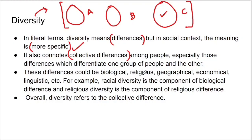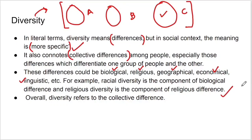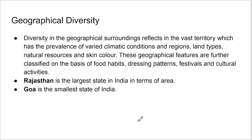These differences could be biological — boy or girl — religious — Hindu, Muslim, Sikh — geographical, economical — poor or rich — or linguistic. Racial diversity is a component of biological difference. Religious diversity is a component of religious difference. So diversity means collective differences among groups.